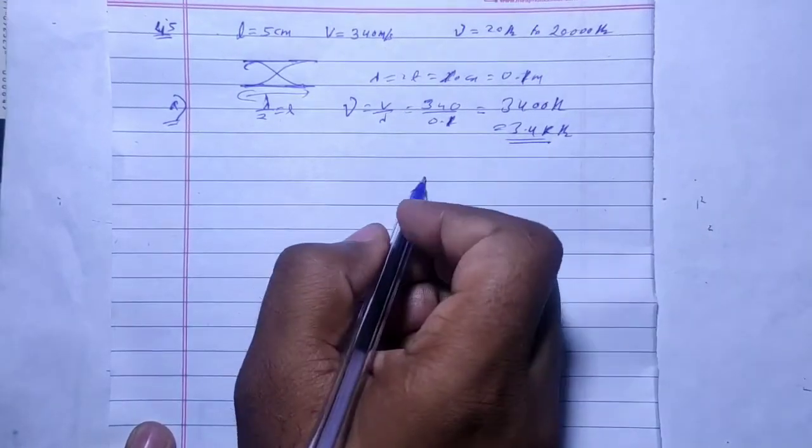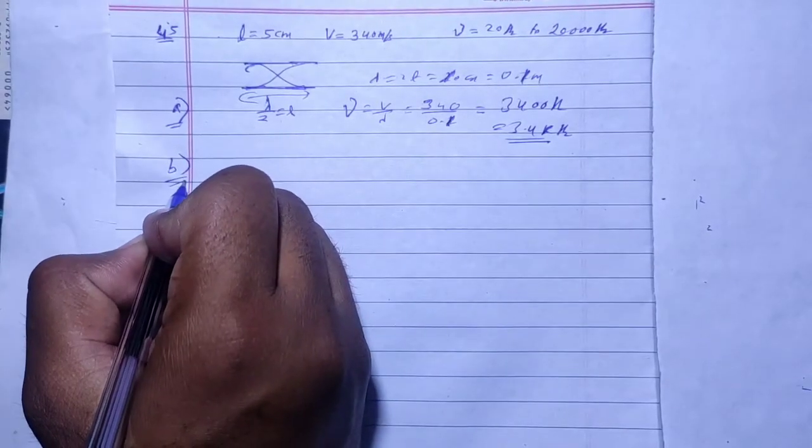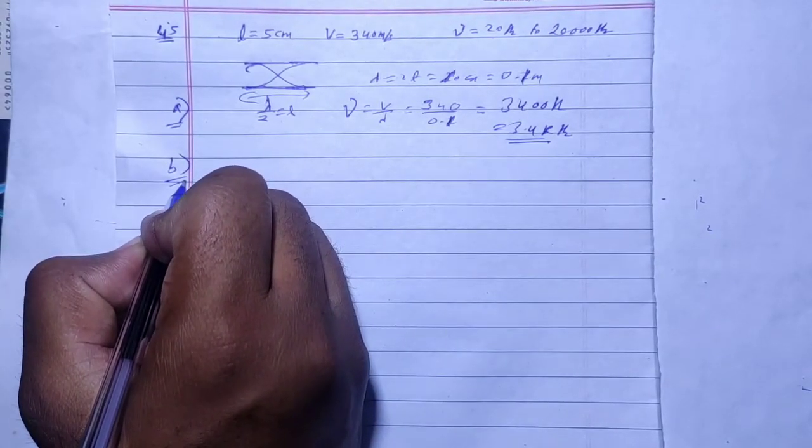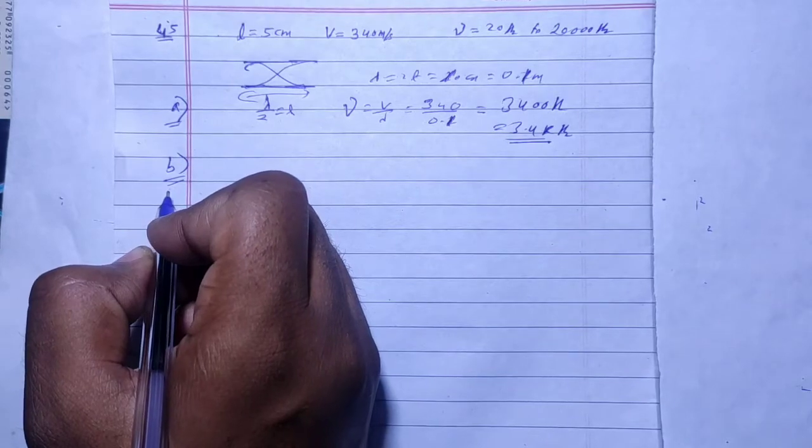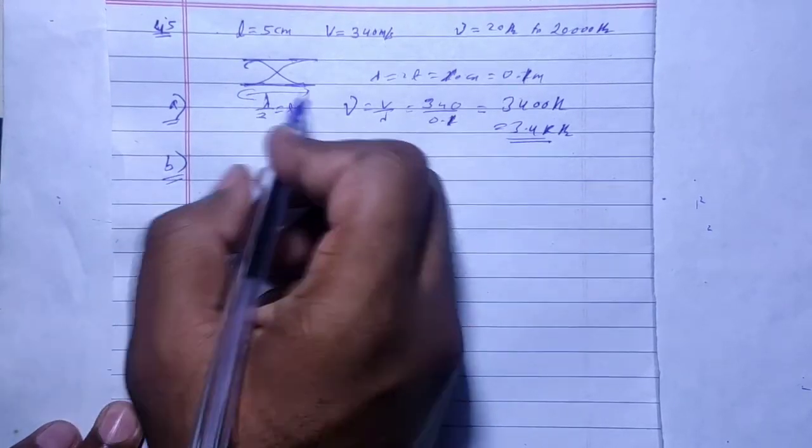Next, part (b): find the highest harmonic in the audible range. We need to use the general form of vibration frequency.